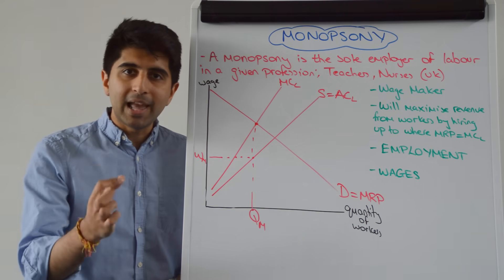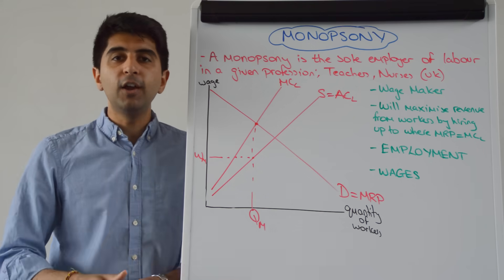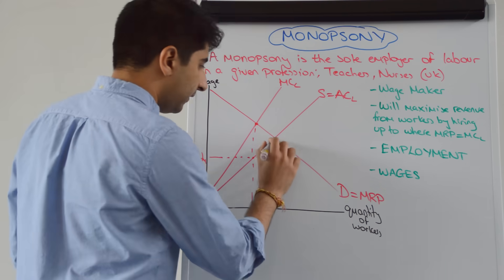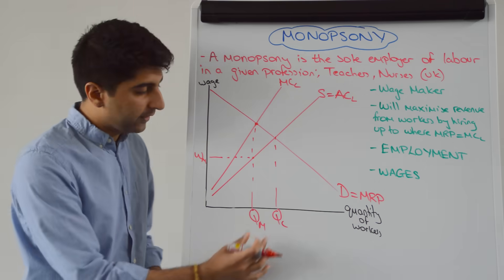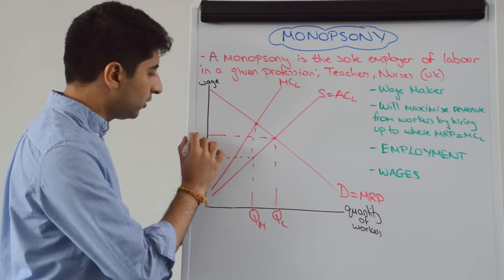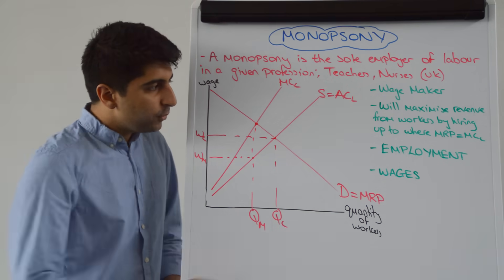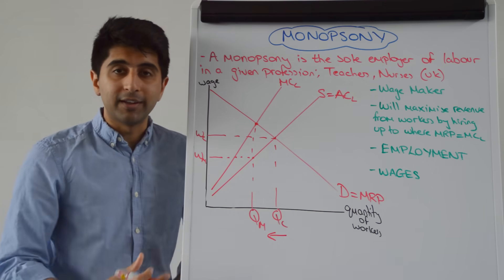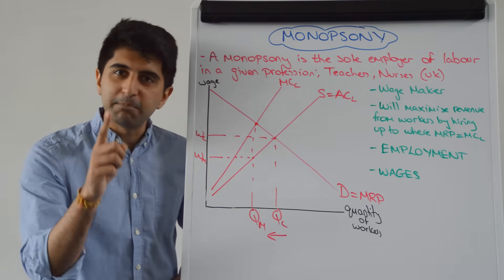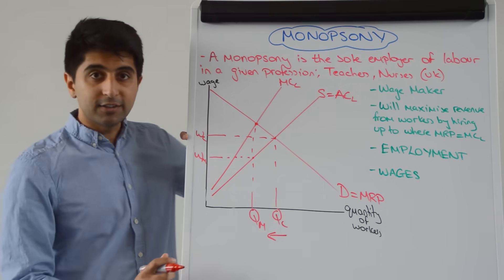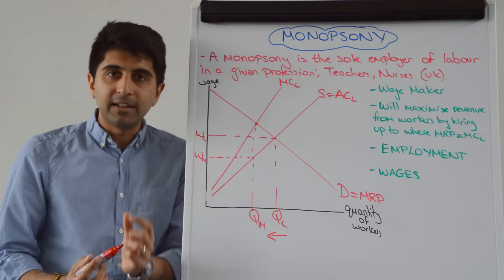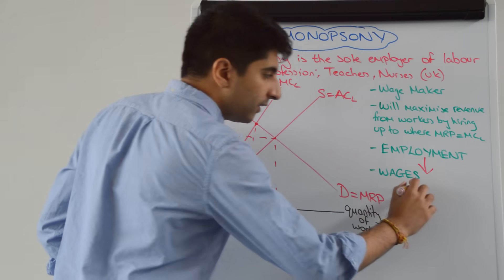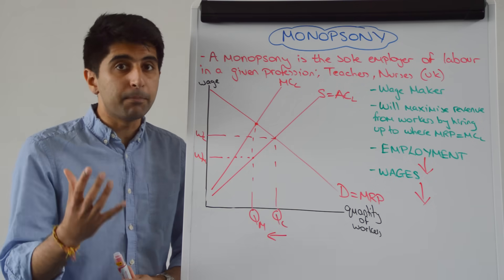Let's compare that to efficient labour market outcomes. In a competitive labour market, wages and quantities are determined where demand equals supply. That gives us the competitive quantity QC and the competitive wage WC. Comparing the two, a monopsonist reduces the quantity of workers — reducing employment — and pays lower wages compared to competitive labour market outcomes. Both employment and wages are significantly reduced in a monopsony.